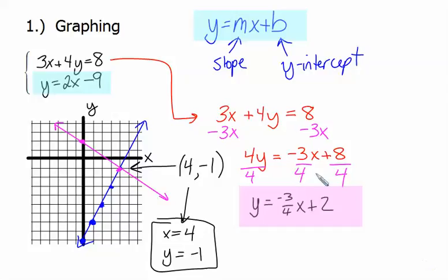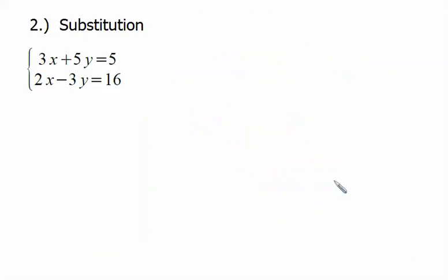The second method we learned in Algebra 1 was substitution. In this case, you need to figure out one of the letters in one of those two equations that we want to get by itself. I would argue, in this problem, that the 2x is the easiest thing to get by itself.